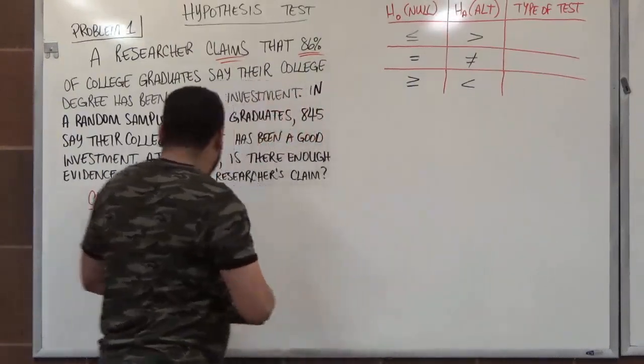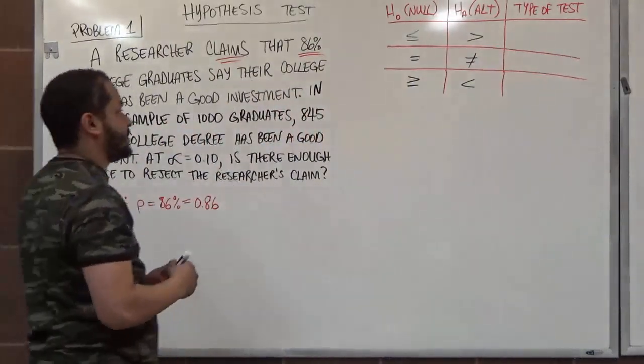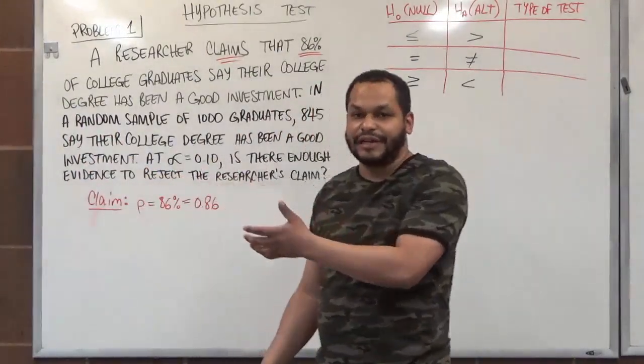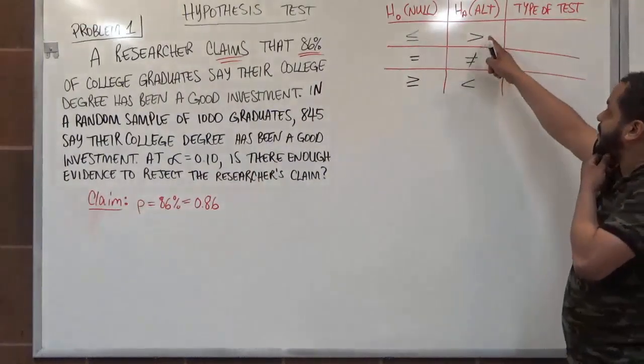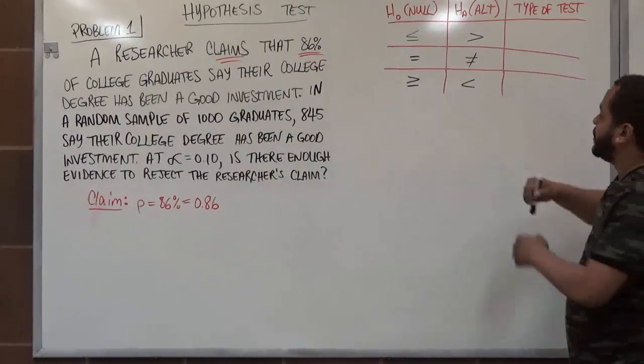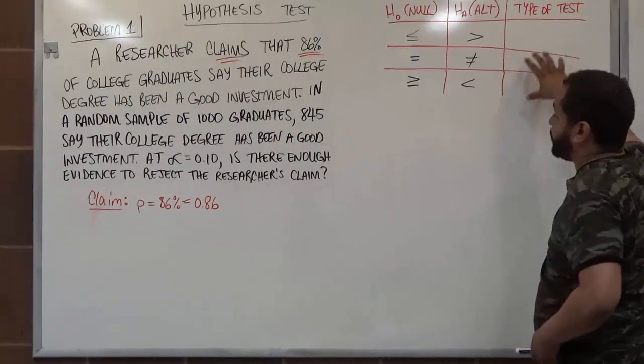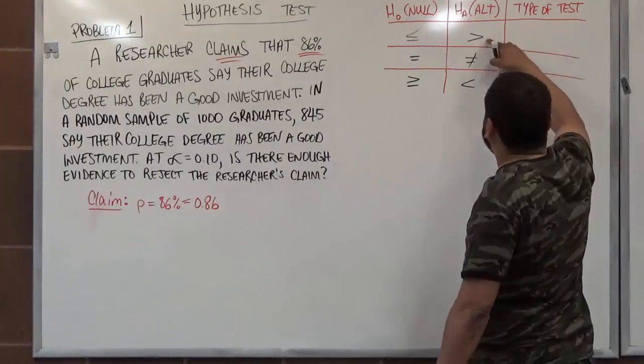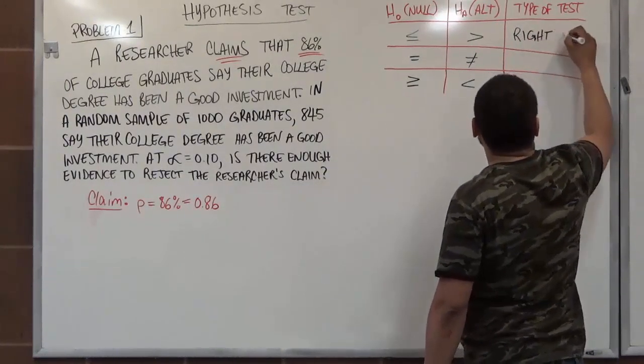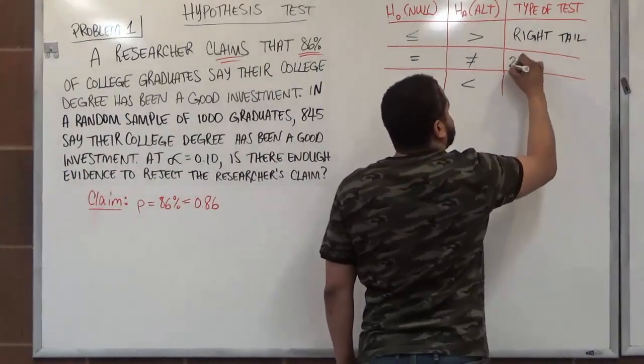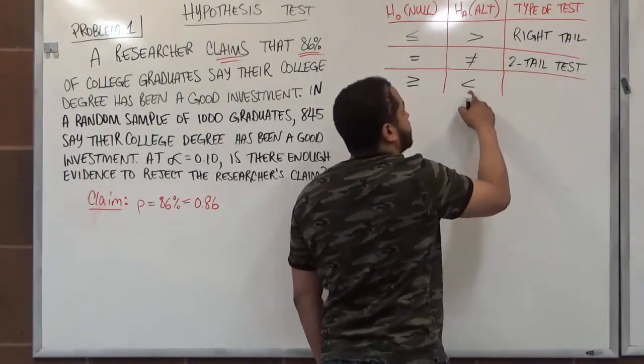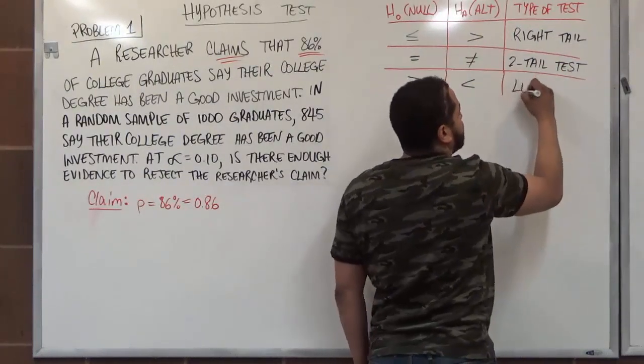Now for equals, not equals is very easy to see as to why it's the counterargument. If somebody says it's raining outside, the counterargument, it's not raining outside. Any time you see on the alternative hypothesis a right, not equal, or a left, this determines the type of test you're going to conduct for your hypothesis test. So if we have a greater than symbol for the alternative, this is a right-tailed test. When we see not equal, this is a two-tailed test. When we see the less than symbol on the alternative, we know it's a left-tailed test.